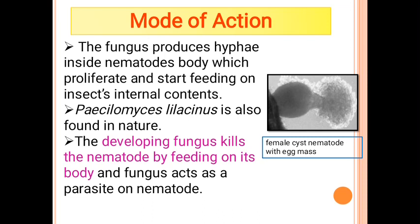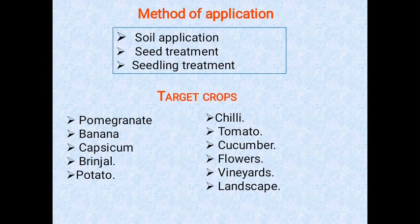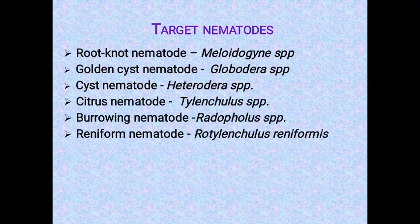These biopesticides or entomopathogenic fungi are applied in various ways: soil application, seed treatment, and seedling treatment. The targeted crops where Paecilomyces lilacinus acts as a nematicide include those affected by root-knot nematodes, golden cyst nematodes, cyst nematodes, citrus nematodes, burrowing nematodes, and reniform nematodes.